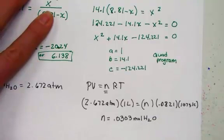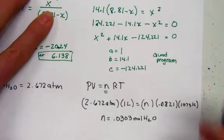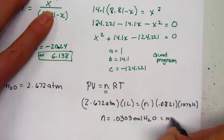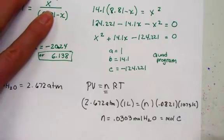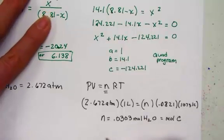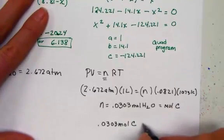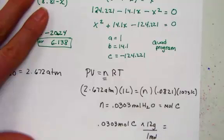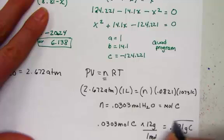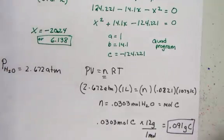Seeing in our equation it is indeed a 1 to 1 stoichiometric ratio, we would need the same number of moles of solid carbon. The moles of water is also equal to the number of moles of solid carbon required at equilibrium. If we need 0.0303 moles of carbon, using the molar mass of 12, 12 grams per mole, we would need 0.09 grams of carbon at equilibrium to keep this reaction going.